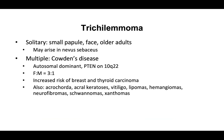Trichlomoma is one of the more fun adnexal tumors. People remember its association with Cowden syndrome because cows say moo. These are solitary small papules on the face of adults. They can arise in nevus sebaceous. With Cowden's disease, you're going to have multiple trichlomomas. Cowden's disease is associated with a PTEN mutation on chromosome 10q22, is autosomal dominant, female to male ratio approximately three to one, and patients have an increased risk of breast cancer and thyroid cancer. They also have multiple other neoplasms including acrochordons, acral keratoses, vitiligo, lipomas, hemangiomas, neurofibromas, schwannomas, and xanthomas.